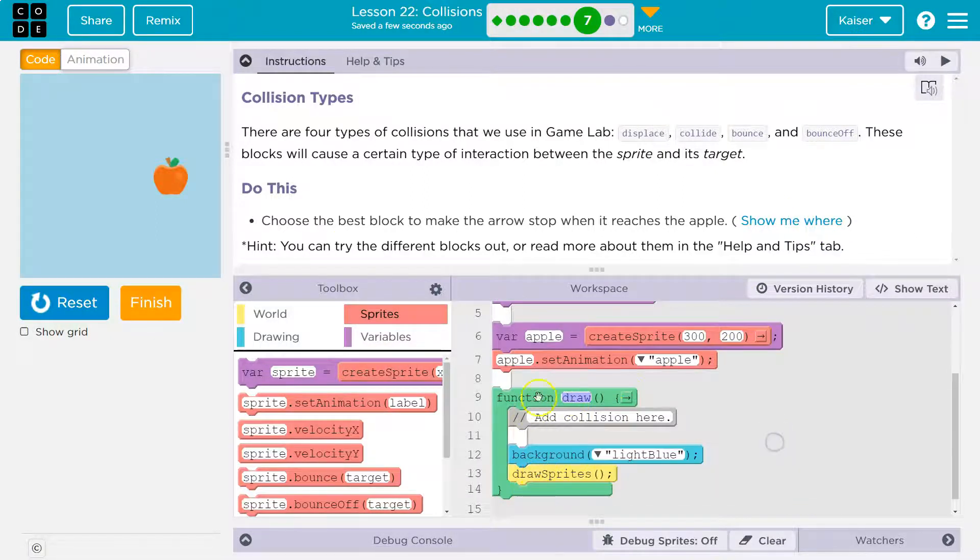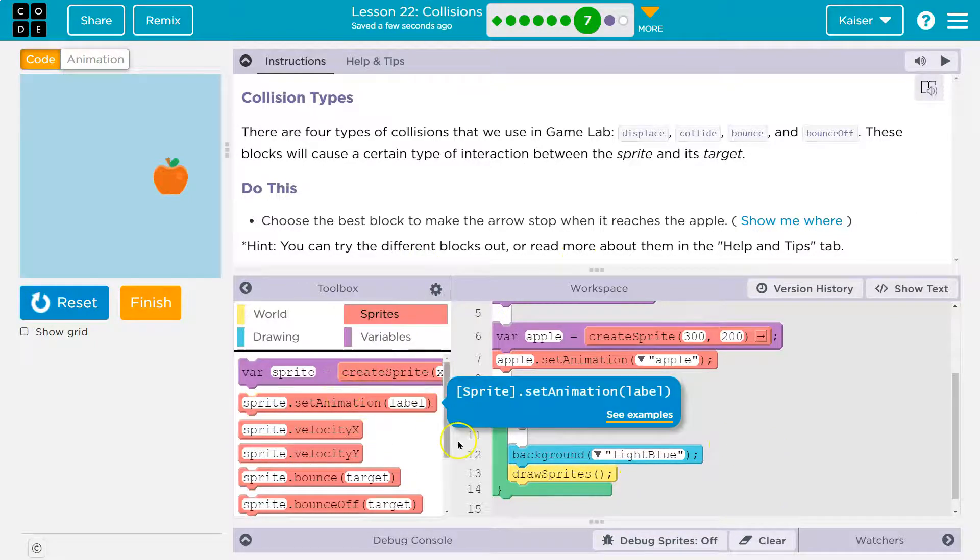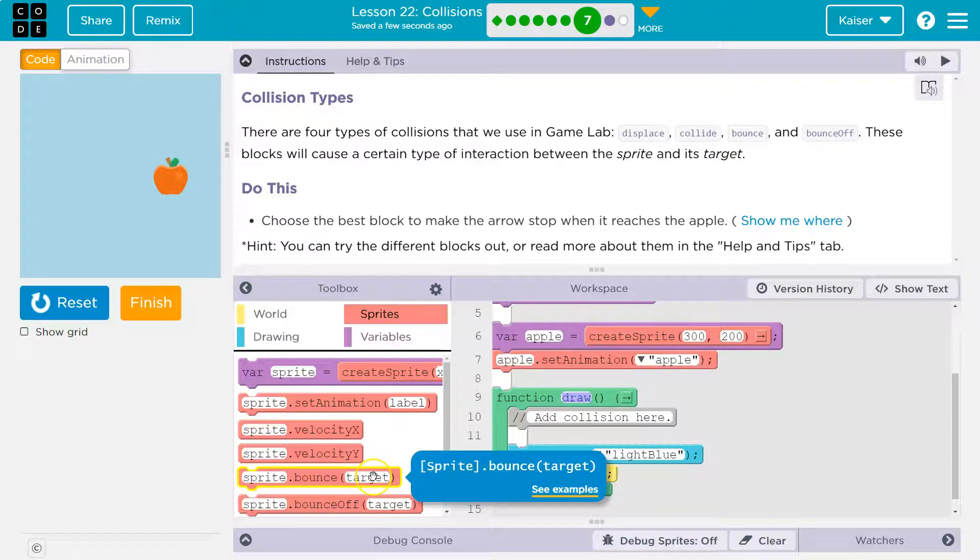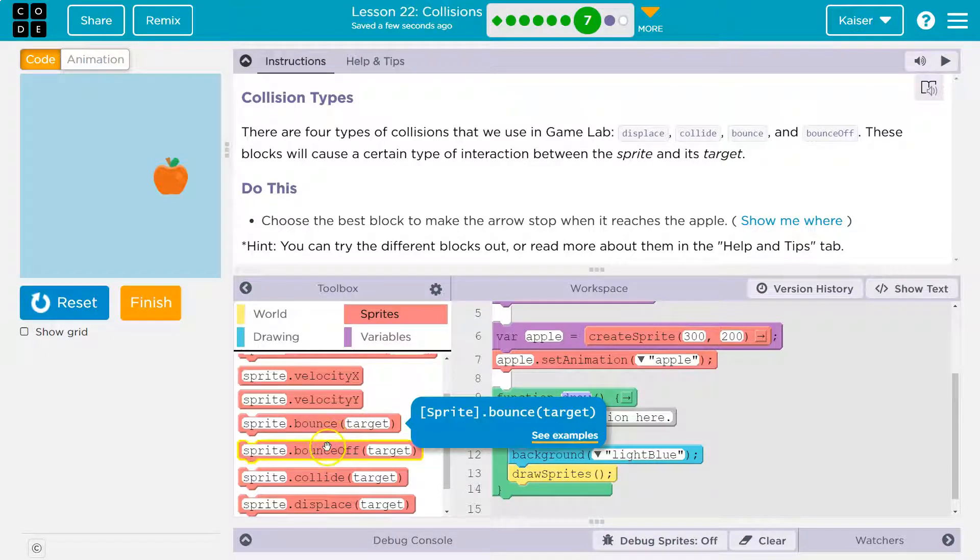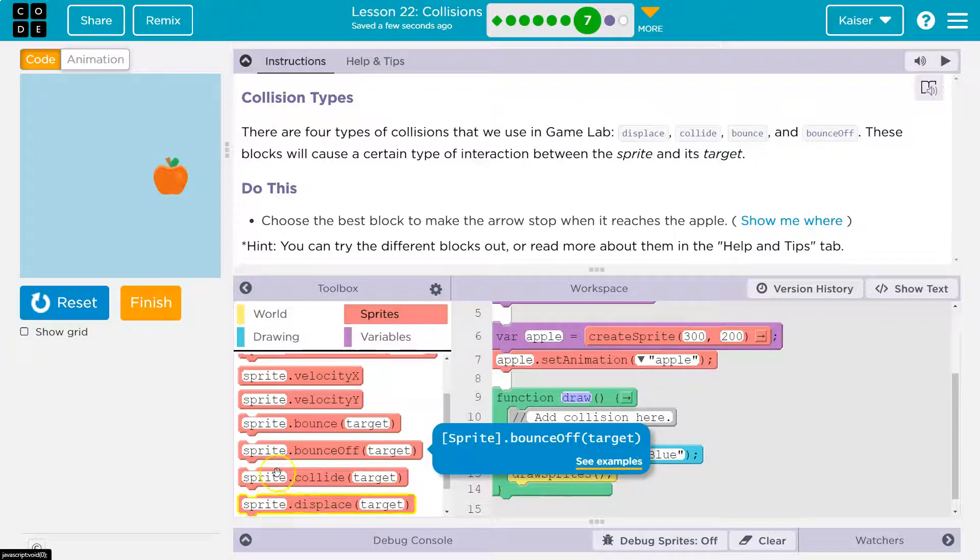Keep in mind the draw loop runs 30 times a second, and that's why we would do this - we want to check 30 times a second if this sprite is touching the target. This method is a conditional, which means it's an if statement, because hidden in the code, it's asking if something occurs.